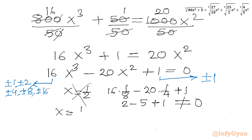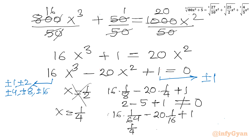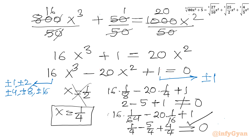Let us consider x = 1/4. Then 16·(1/64) − 20·(1/16) + 1 = 1/4 − 5/4 + 4/4 = 0. Yes, that makes the equation zero. So x = 1/4 is our base solution.